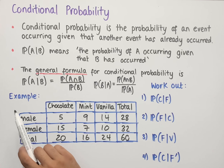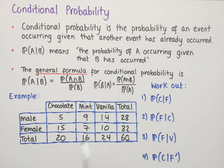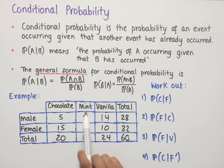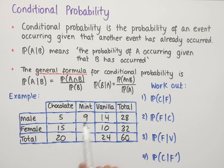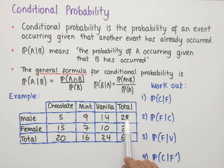Let's look at an example involving conditional probability in a two-way table. We have different types of ice cream at the top: chocolate, mint, and vanilla. We have males and females, and then the totals at the ends of each column and each row.